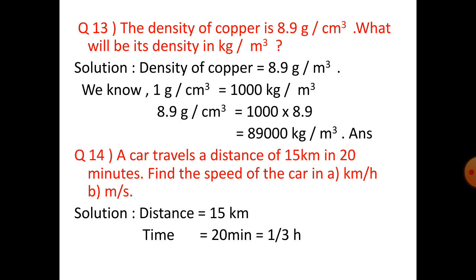Question number 13: The density of copper is 8.9 gram per cubic centimeter. What will be its density in kg per meter cube? Note that in the book it may be written as kg m⁻³, which means kg per meter cube. We know that 1 gram per cubic centimeter equals 1000 kg per meter cube, so 8.9 gram per cubic centimeter multiplied by 1000 equals 8,900 kg per meter cube.